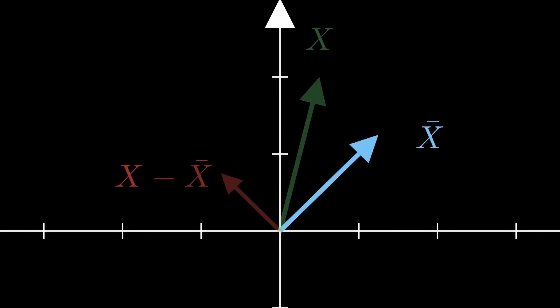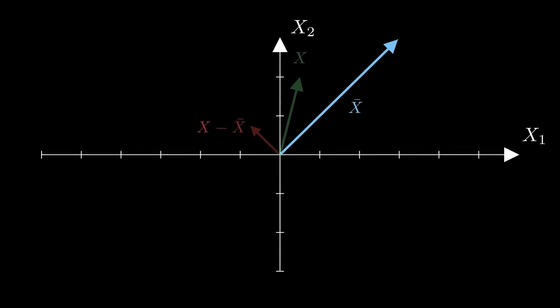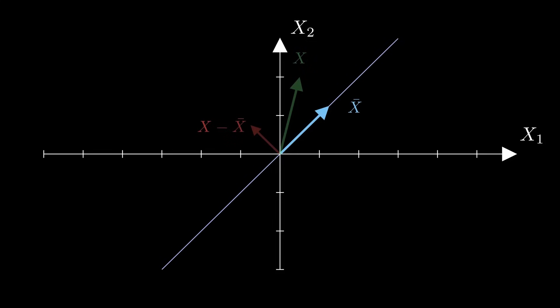Therefore, no matter what data points we encounter, the mean vector must lie somewhere on this line. It is not free to be anywhere in the plane; we're now limited to this line, and a line is only one dimensional, so that's why we say the sample mean vector has only one degree of freedom.